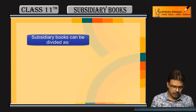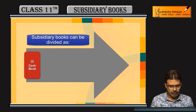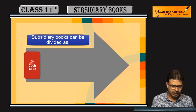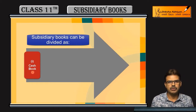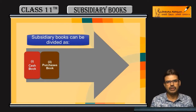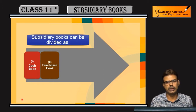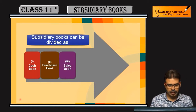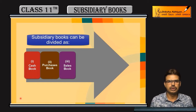Subsidiary books can be divided as: first, the cash book; then the purchase book, which shows all credit purchases of goods; and the sales book, which shows credit sales of goods.